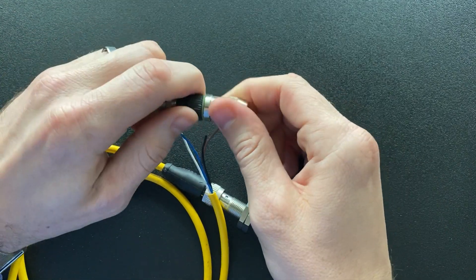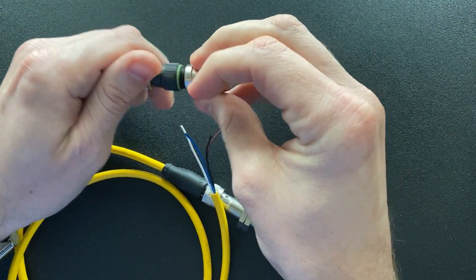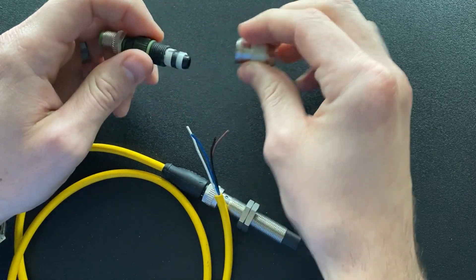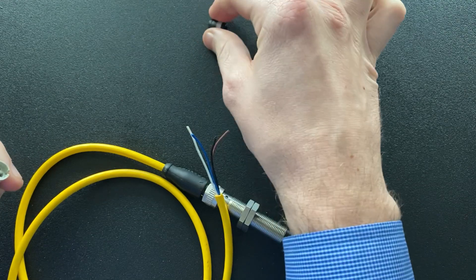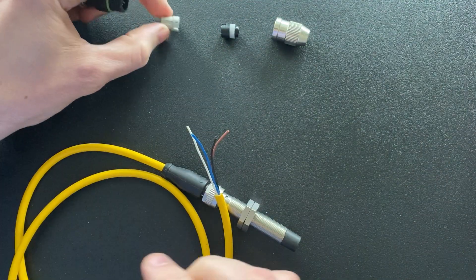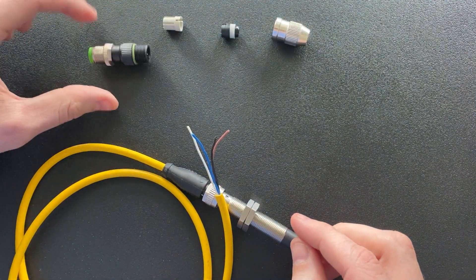This is the field wireable connector here. Really simple devices made up of four components: the sealing nut, which is this silver piece; the strain relief; the contact carrier; and the connector termination.